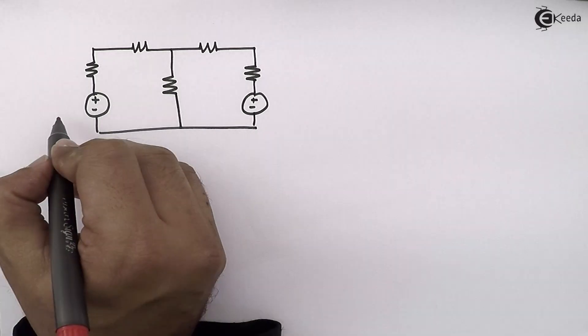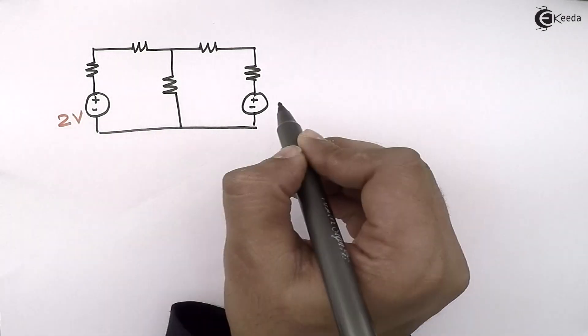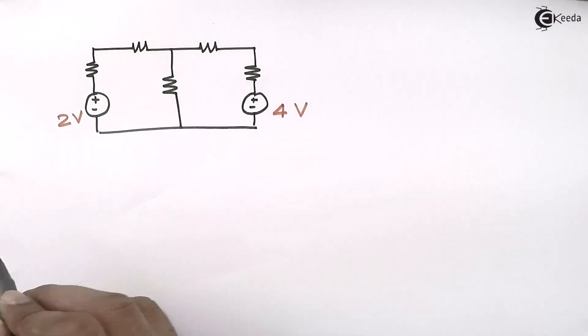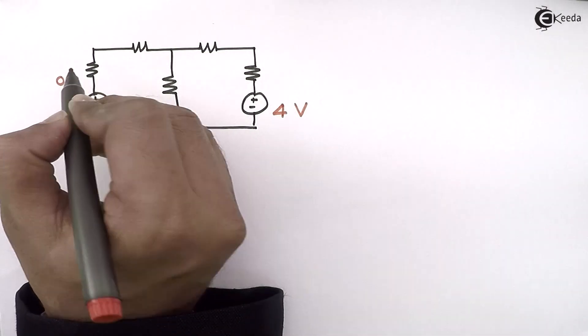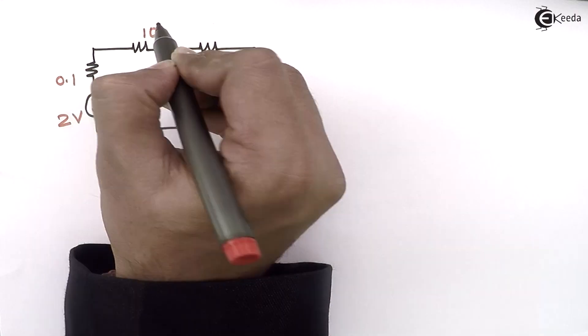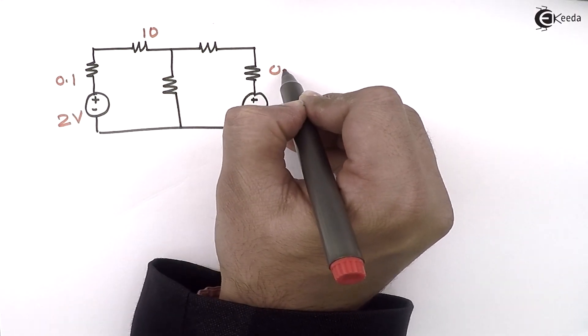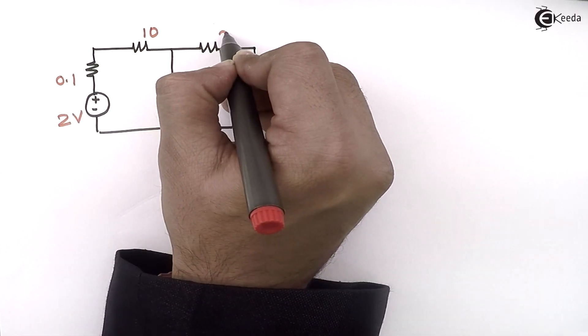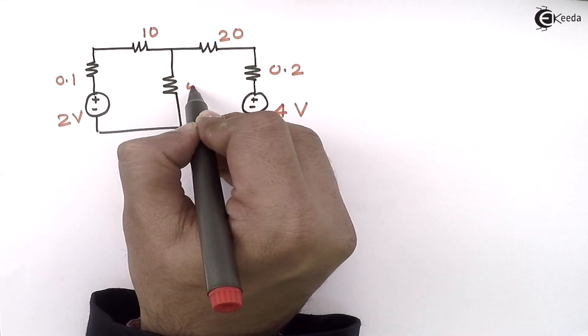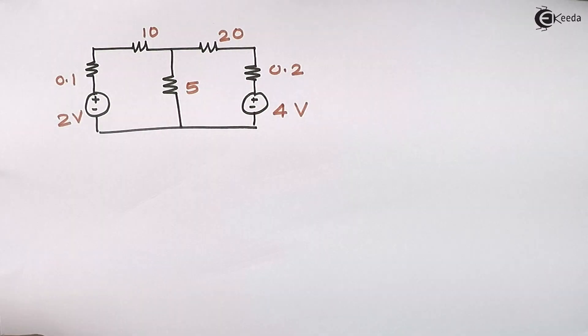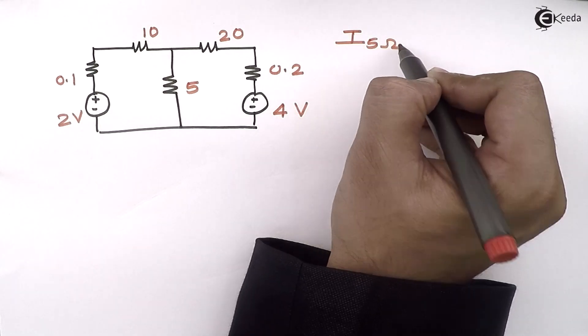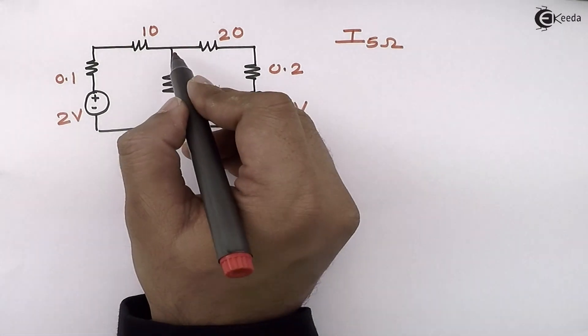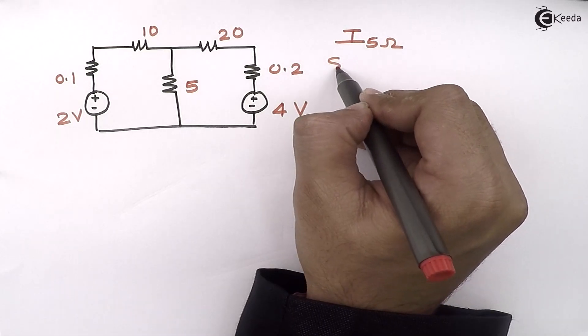A voltage source of 2 volts is present and 4 volts is also given. Resistances are 0.1 ohm, 10 ohm, 0.2 ohm, 20 ohm, and 5 ohm. The objective is to get the current flowing through the 5 ohm resistance using superposition theorem.